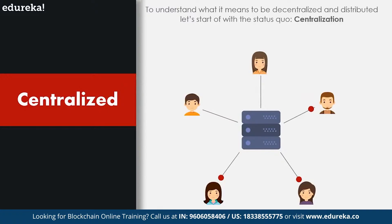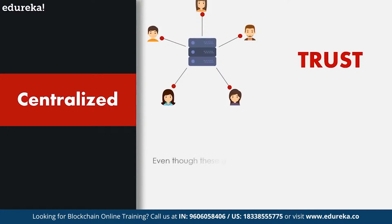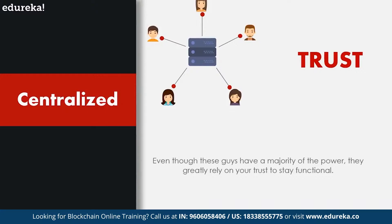We are surrounded by a mass of centralized systems which we use every day — be it ordering food from a delivery and logistics system like Zomato or booking a cab through Uber. You're basically going through a third party. This third party has complete power over the rules and regulations of the system. Even though these entities hold a majority of the power, they greatly rely on your trust to stay functional. For example, you keep your money in the bank rather than stowing it away at home because you trust the bank more than your next-door neighbor.